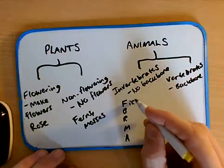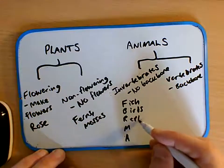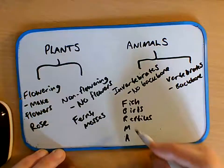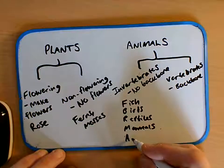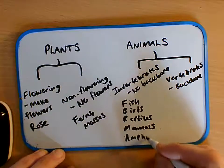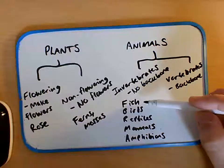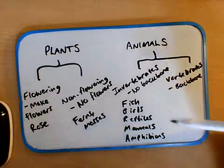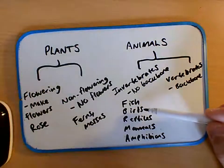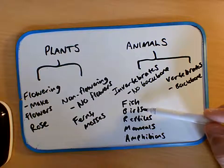There are the fish, the birds, the reptiles, the mammals, and the amphibians. Fish have cold blood, they've got gills, and they swim. Birds are warm-blooded, they have wings, and they're covered in feathers.